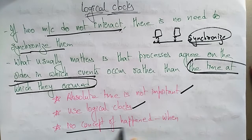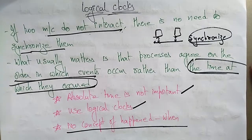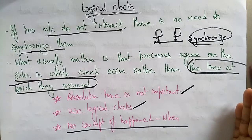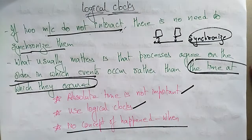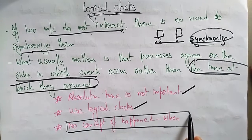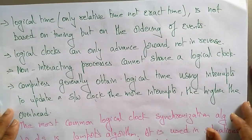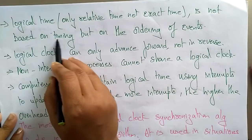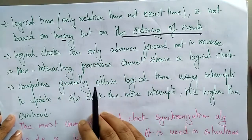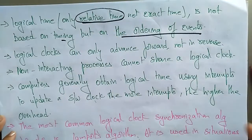There is no concept of 'happened when' — meaning at what time something happens doesn't matter. What matters is only the order in which messages are sent: first this message, then next this message. It only bothers about the order in which events occur, not the time. Absolute time is not important in logical clocks. The logical time is not based on timing but on ordering of events — it is only relative time, not exact time.